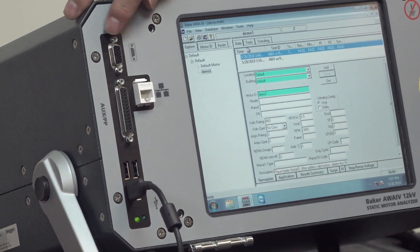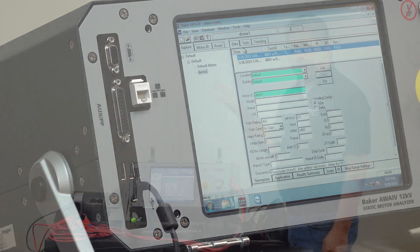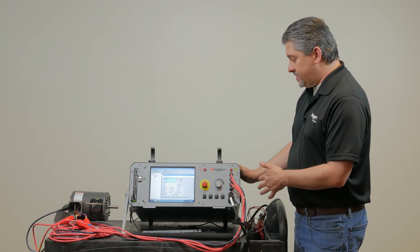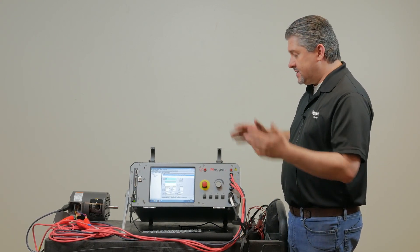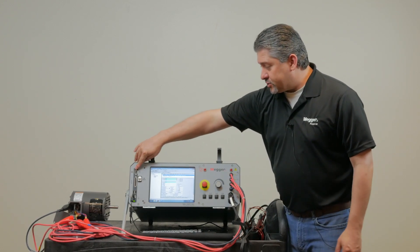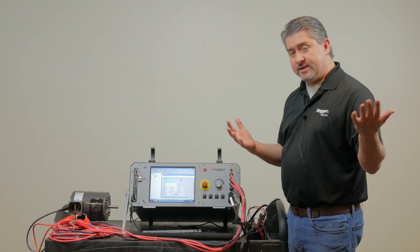The first is the VGA output, which allows you to connect your AWA to an external monitor. This can be useful in a shop environment where the unit is fairly fixed in place and you want a larger screen for display. It's also useful for training if you want to display to a large audience.